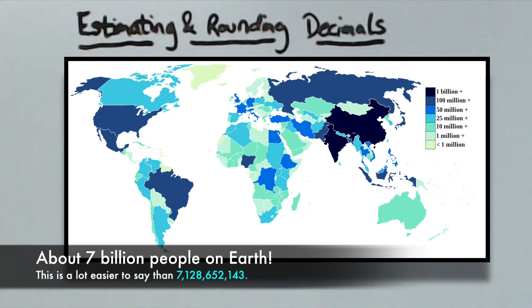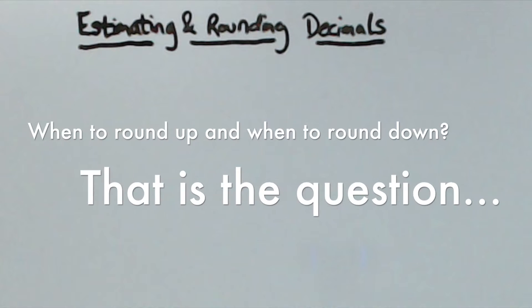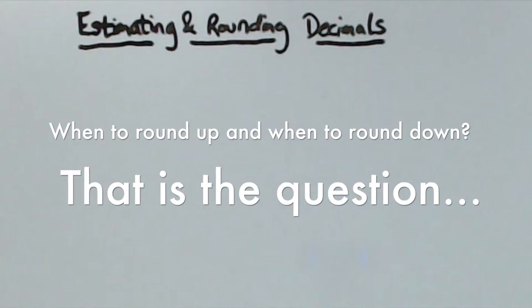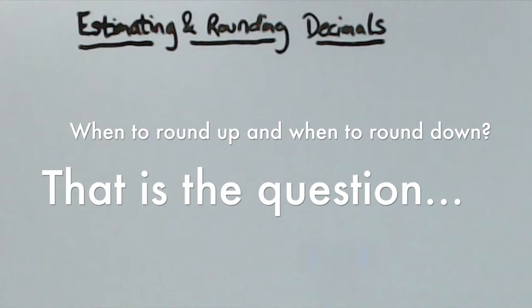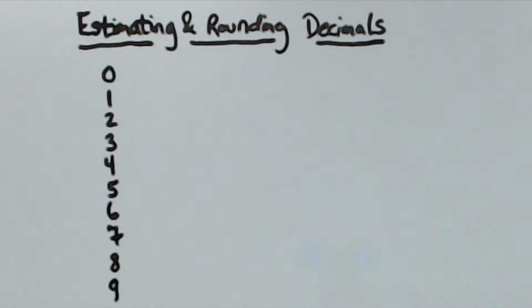That being said, let's figure out how to do this ourselves. The next important concept to understand is when to round up and when to round down. The numbers 0 through 9 are what you base the rounding on. The exact middle of 0 through 9 is between the 4 and the 5. This is our cutoff point for whether you round up or down.